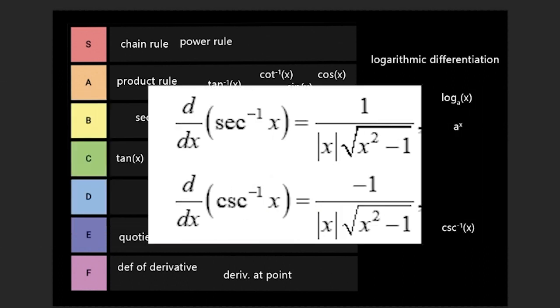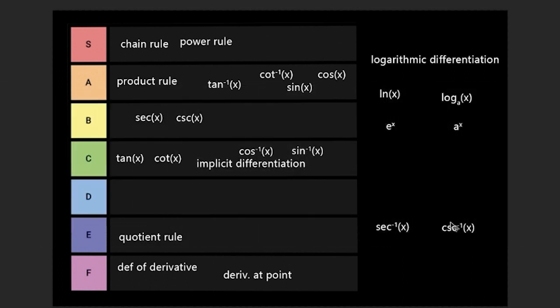Next, we have inverse cosecant and inverse secant. Now, I think these are in D tier because they look good, but the fact that there's absolute value bars makes it a nightmare to simplify.